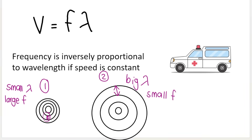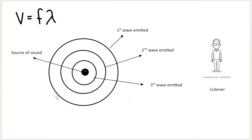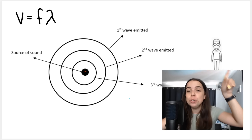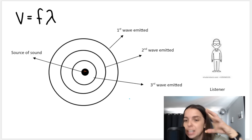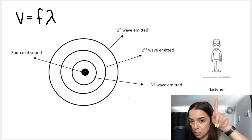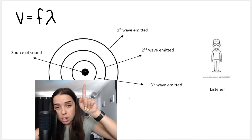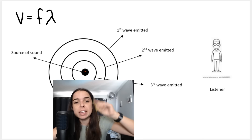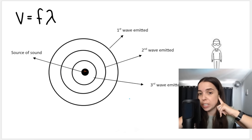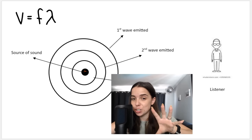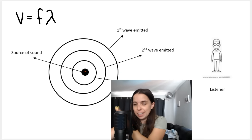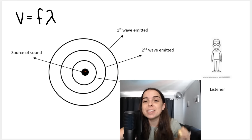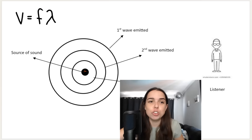Now, what does this have to do with the Doppler effect? Let's go back to a situation where a sound source is emitting a sound wave. Pretend you are standing on the side of the street — you are the listener, or observer. This is a parked police car with the siren going off. These waves are being emitted and will eventually reach your ears. The parked car is not moving and you are stationary.